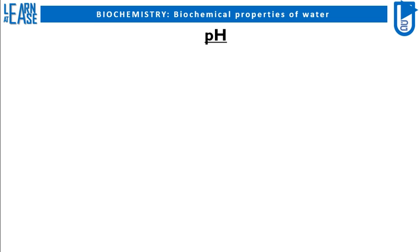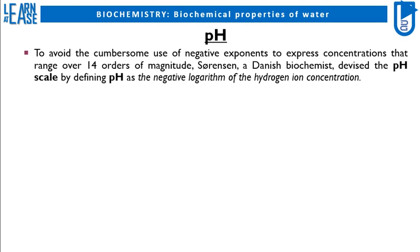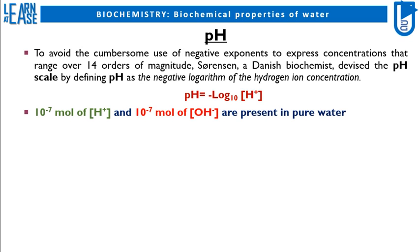Now I will explain the concept of pH. To avoid the cumbersome use of negative exponents to express concentrations that range over 14 orders of magnitude, Sørensen, a Danish biochemist, devised the pH scale by defining pH as the negative logarithm of the hydrogen ion concentration: pH = −log₁₀[H+]. In pure water, 10 raised to minus 7 moles of H plus ions and 10 raised to minus 7 moles of OH minus ions are present, so pH = −log₁₀(10⁻⁷) = 7.